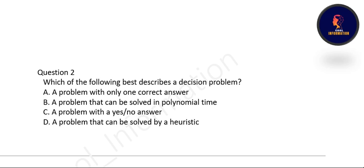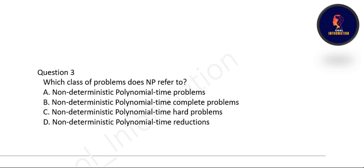Next question: which of the following best describes a decision problem? Is it a problem with only one correct answer? No. A problem that can be solved in polynomial time? No. A problem with a yes or no answer is called a decision problem — option C is correct. Next question: which class of problems does NP refer to? NP refers to non-deterministic polynomial time problems. Option A is correct.